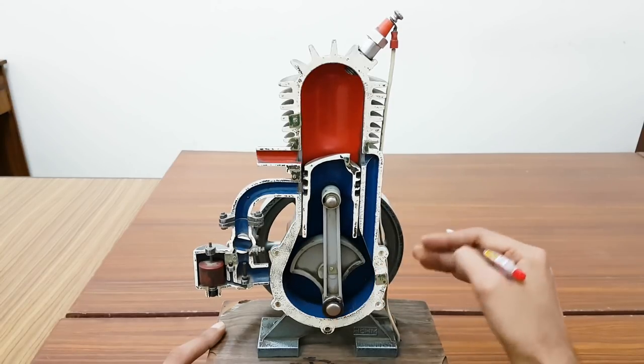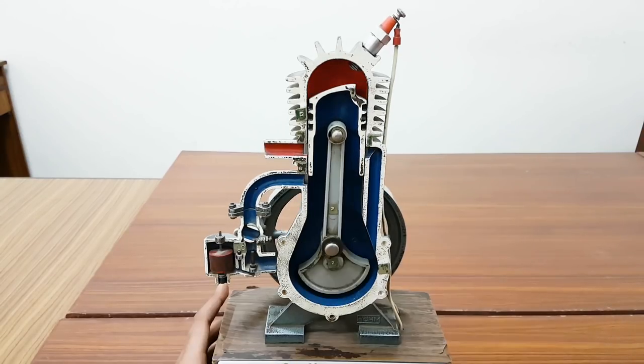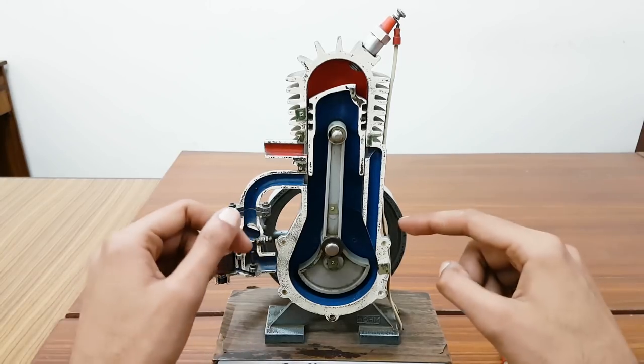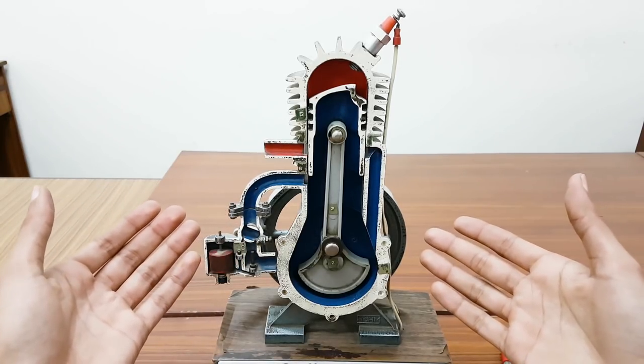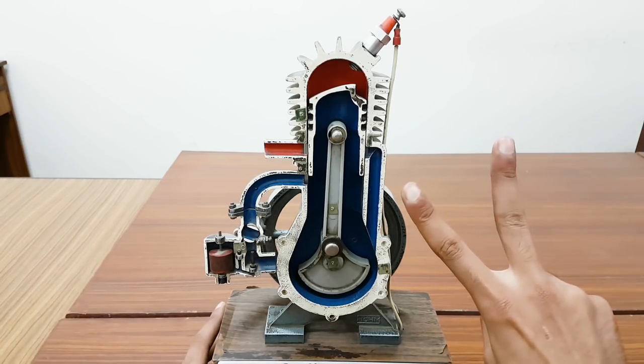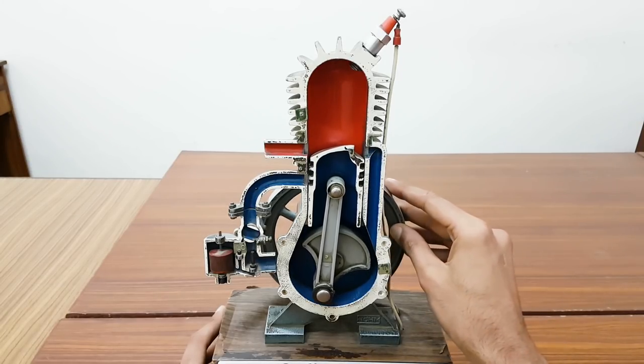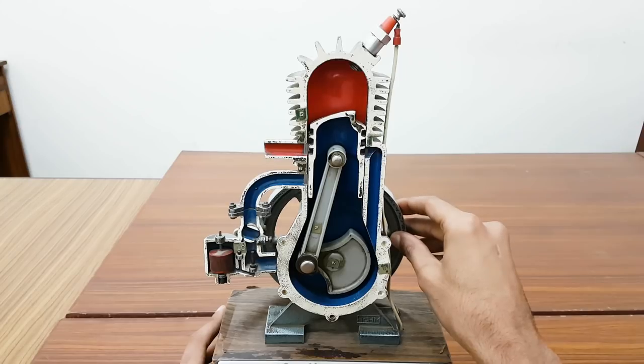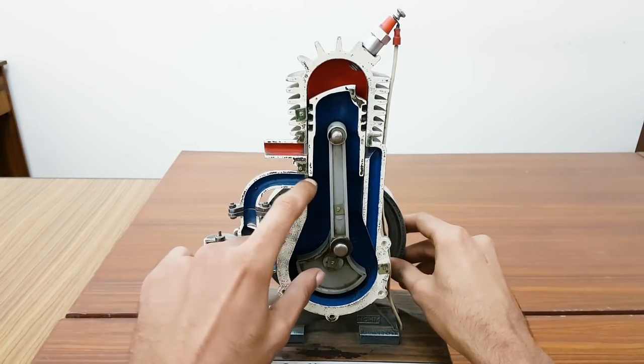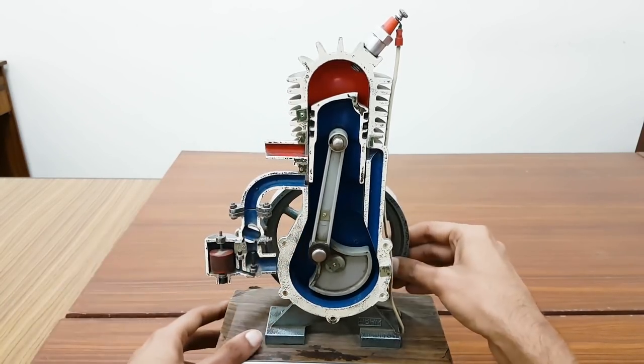So the name two-stroke is because this is an IC engine. It has four operations, but it covers two operations in just one stroke length. When moving from bottom to top, it starts compression, and here you can see the port is open for intake. From down to up, it performs two operations: compression as well as intake.